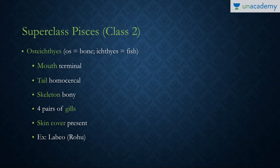Class two is Osteichthyes — 'osteo' means bone and 'ichthyes' means fish. The mouth is in the terminal position, the tail is homocercal, the skeleton is bony, and there are four pairs of gills. The operculum is present. Example: Labeo, or Rohu. That's it for this lesson — stay tuned for the next lesson on Amphibia.